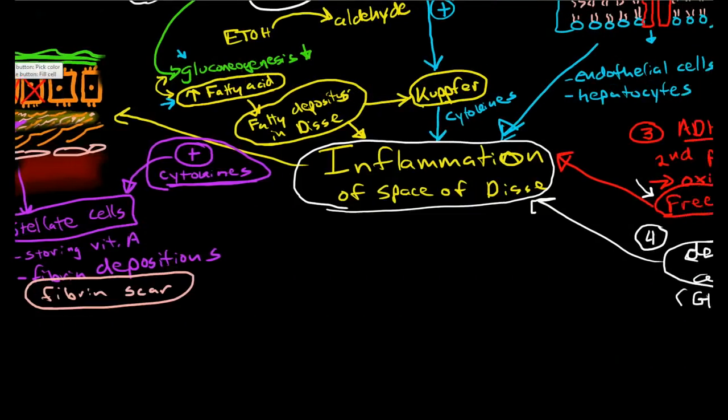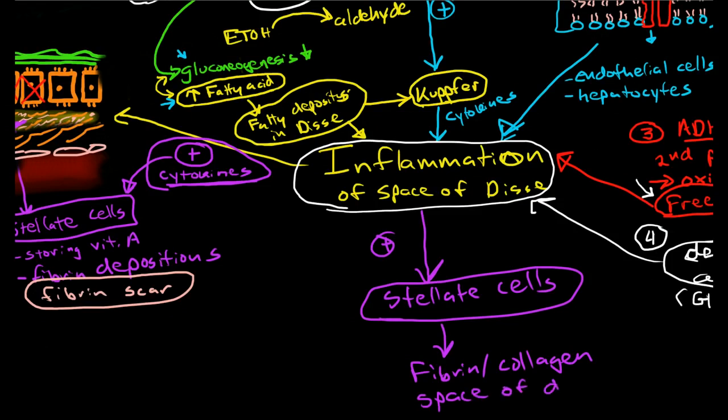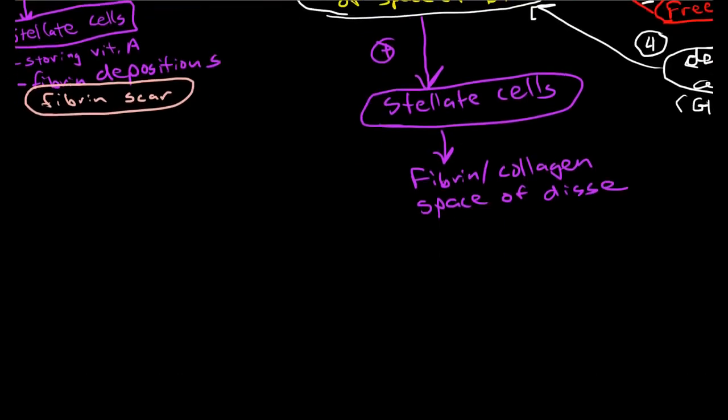So let's write this all down in our sort of flow chart here. So we have inflammation. And the inflammation stimulates the stellate cells. And then stellate cells begin to produce, deposit fibrin and collagen into space of Disse. And that causes damage to the hepatocytes.